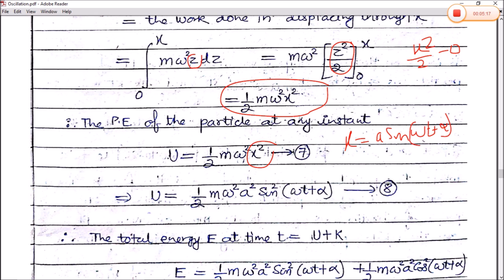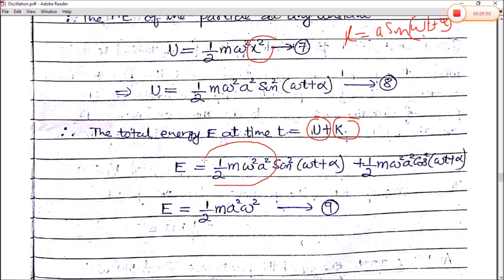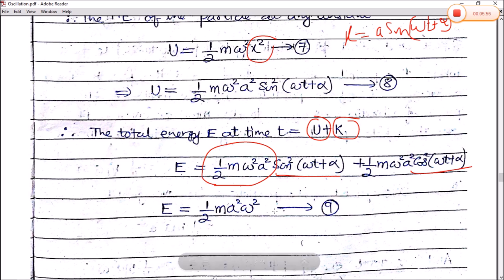Since x = a sin(ωt + α), substituting x² gives u = ½mω²a² sin²(ωt + α), which is equation number 8. Therefore, the total energy E at time t equals u + k — potential energy plus kinetic energy. Potential energy is ½mω²a² sin²(ωt + α) and kinetic energy is ½ma²ω² cos²(ωt + α). Both terms share the common factor ½mω²a², and since sin²θ + cos²θ = 1, we get E = ½mω²a². This is equation number 9.